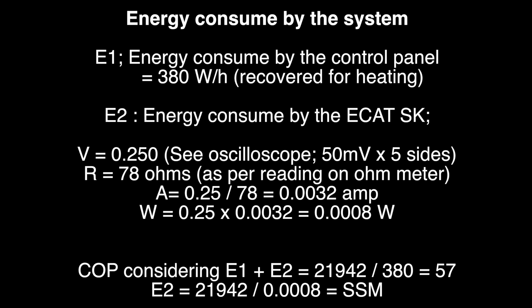Then we see E2 is the energy consumed by the ECAT, which is the energy that actually enters the ECAT. As we have seen, we have a voltage of 0.25 volts. The oscilloscope measured 50 millivolts times 5, which is 250 millivolts. That is equal to 0.25 volts.